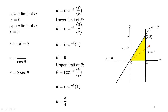For the upper limit, we will use the equation x equal to y. Using the formula theta equals tan inverse of y over x, we put y equal to x, giving x over x which is 1. So we have theta equal to tan inverse of 1, which is equal to pi by 4. So the limits of theta are 0 to pi by 4.